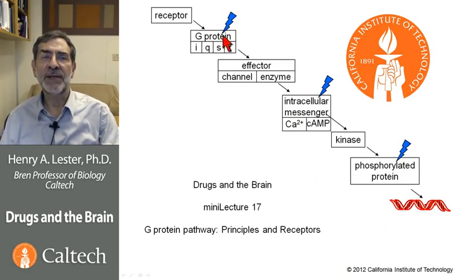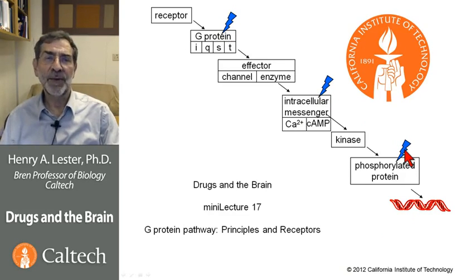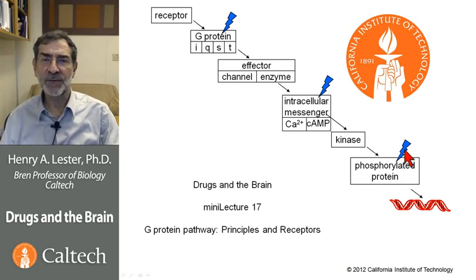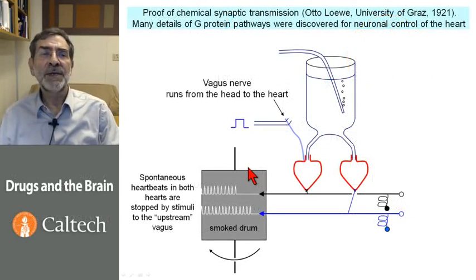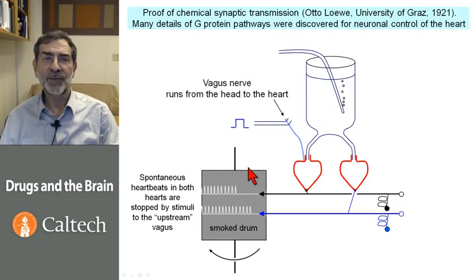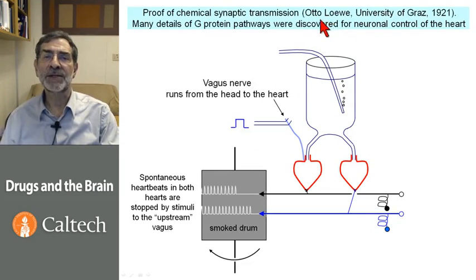These lightning bolts occur at three places in the pathway because those are the places where high-energy phosphate groups are transferred from either ATP or GTP to a protein, or from one protein to another. We start this story with the proof of chemical synaptic transmission, which was done by the great physiologist-pharmacologist Arthur Löwe at the University of Graz in 1921.